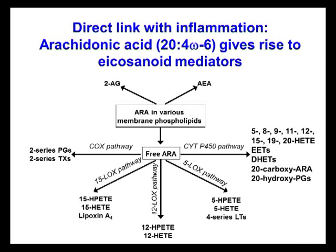Arachidonic acid-containing phospholipids can also act as precursors for the formation of endocannabinoids, also involved in inflammation. And of course, it's well known and well described that this pathway of arachidonic acid metabolism to eicosanoid mediators is a target for anti-inflammatory pharmaceutical agents.